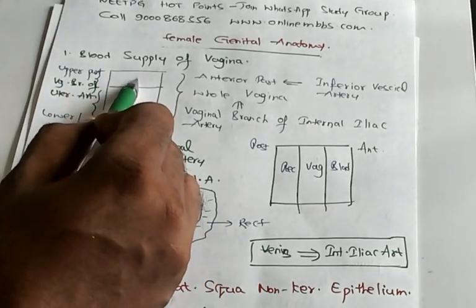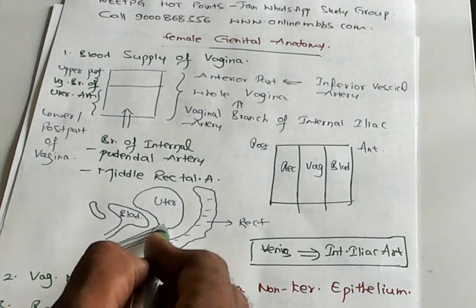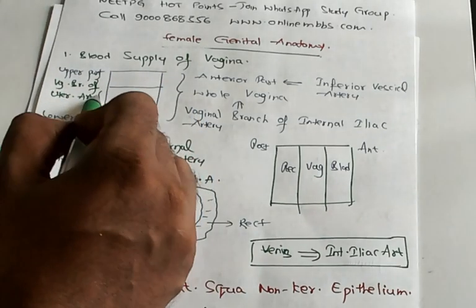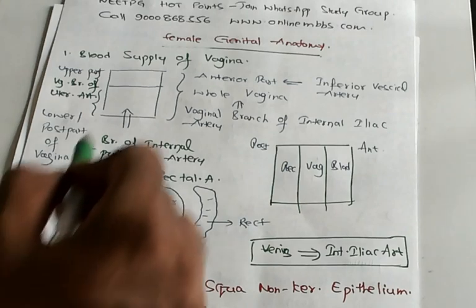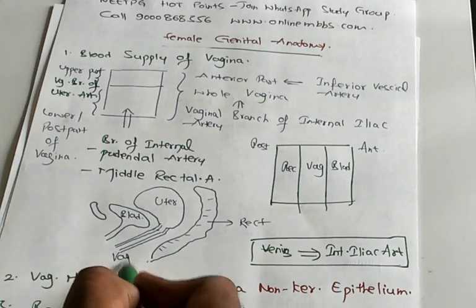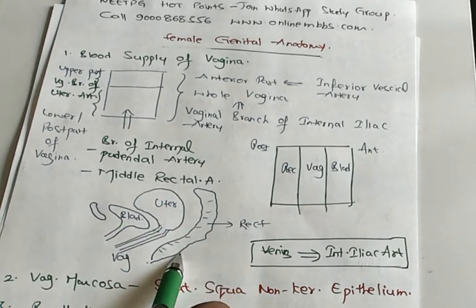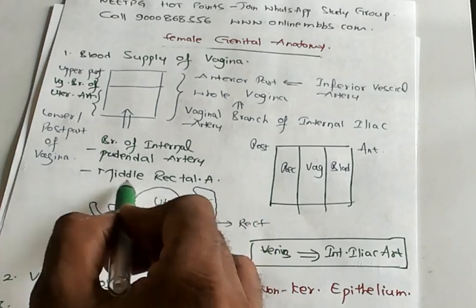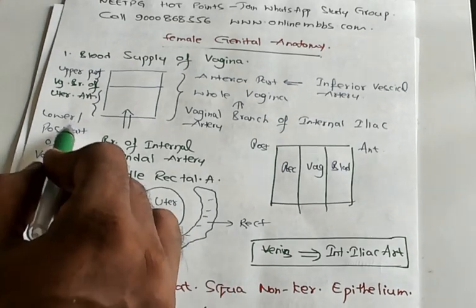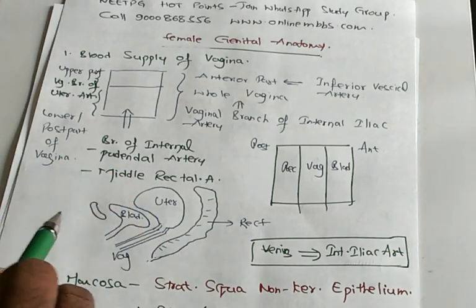Now, the upper part of the vagina, vagina upper part meets with uterine. So that is the reason the vaginal branch of the uterine artery is supplying the upper part. The lower part of the vagina and the posterior part of the vagina, it is supplied by vagina ke piche kya hai? Rectum. So middle rectal artery and a branch of internal pudendal artery, they supply the posterior part of the vagina.